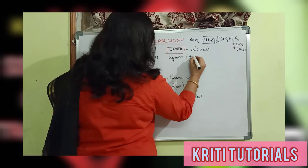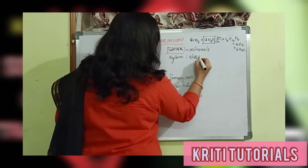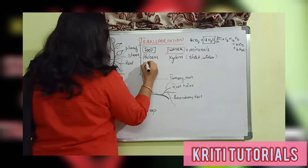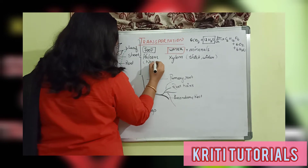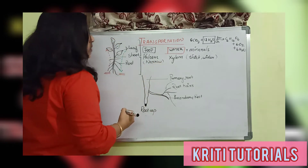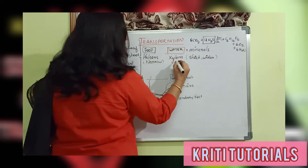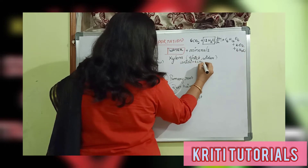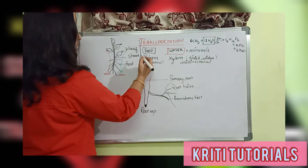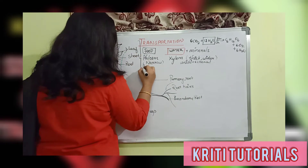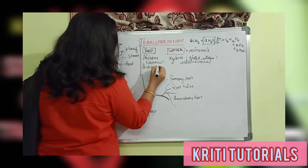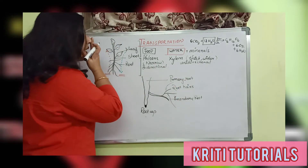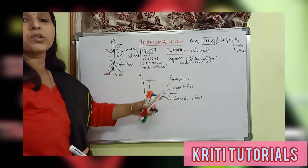Coming to xylem, it is said to be the most important vessel which helps in the transport of water and minerals. The vessels of xylem are very thick and wide, whereas the pipes of the phloem are narrower. In the case of xylem, the transport of water is unidirectional, whereas in the case of phloem, it is bidirectional. These are the main points to remember in the transport system.